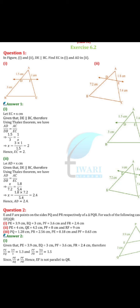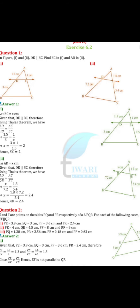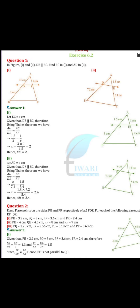In the second figure, you have to find out the length of AD. Since DE is parallel, it divides the two sides in equal ratios. So the ratio AD upon DB will be equal to AE upon EC. Comparing these, the value of EC will be obtained. Similarly, for AD, take it as x and use Thales theorem to equate the ratios of corresponding sides to find the unknown quantity.